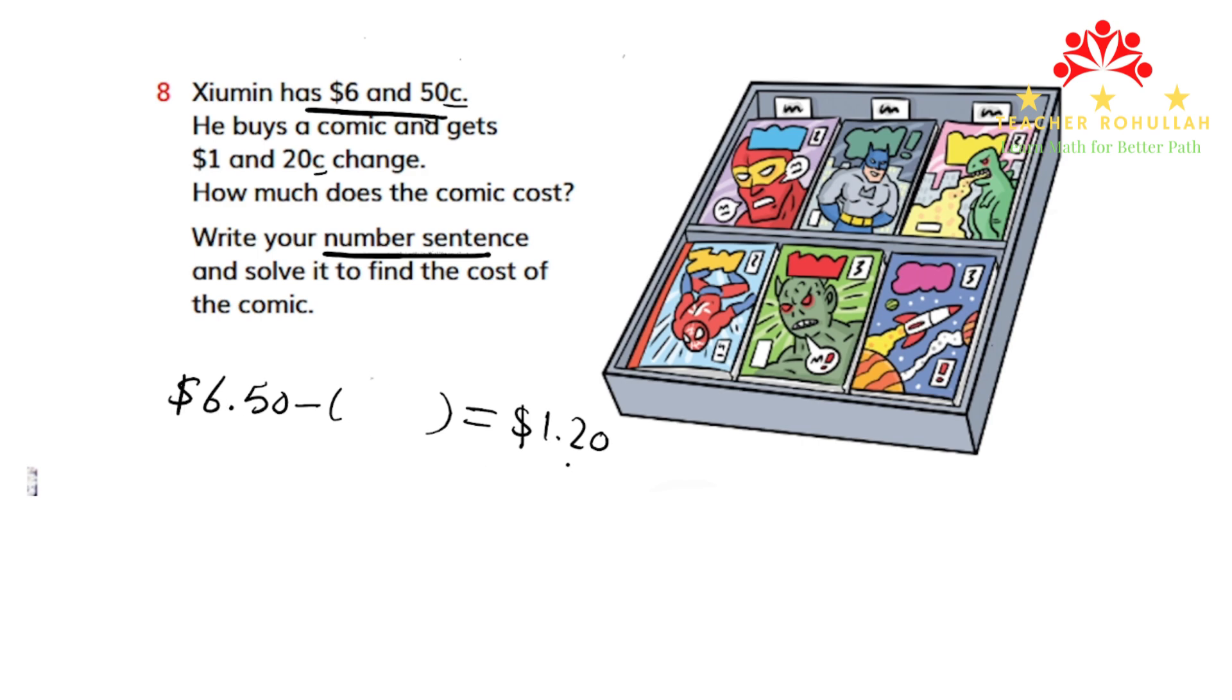...using column subtraction. We write $6.50 minus $1.20. Now we subtract: zero minus zero is zero, five minus two is three, bring down the decimal point, six minus one is five, then add the dollar sign. The price of the comic is five dollars and thirty cents.